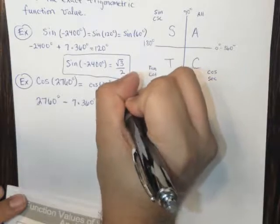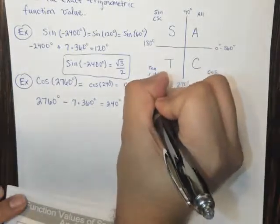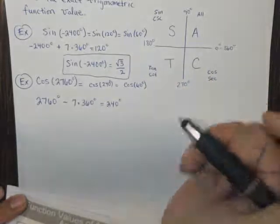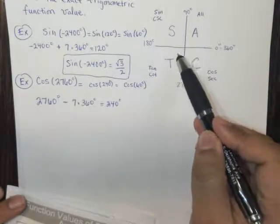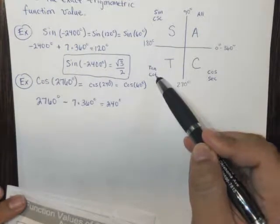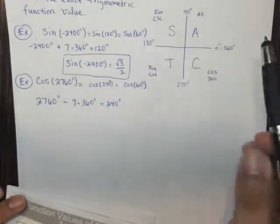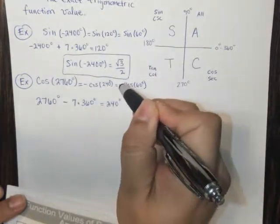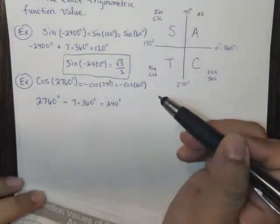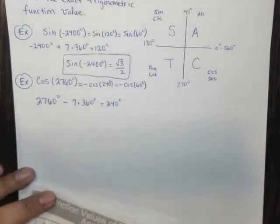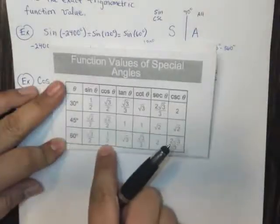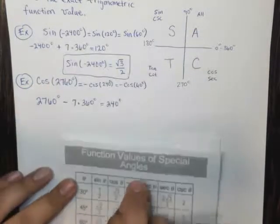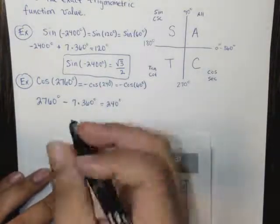And by reference, it's going to be the cosine of 60 degrees. But just remember, all students take calculus. Since 240 was in this range right here, cosine is negative. So we need the negative cosine, the negative cosine of 60. And if you just look at the cosine of 60, it's 1 over 2. So it's just negative 1 over 2.